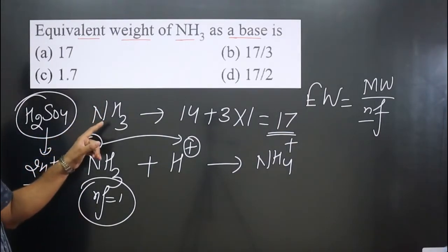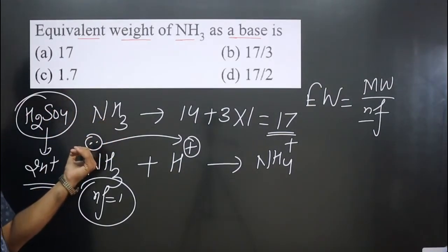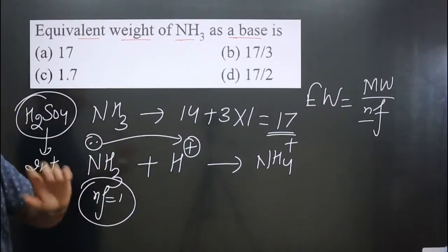This is Bronsted-Lowry acid and base theory. Since NH₃ is a proton acceptor, whatever the number of protons it is accepting, that is the n factor value.